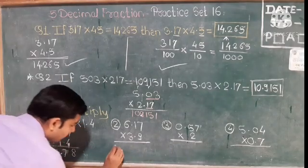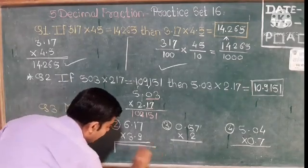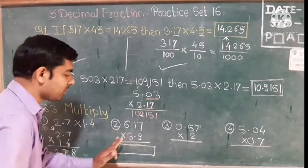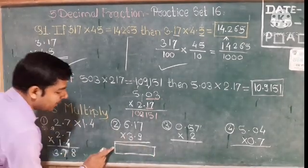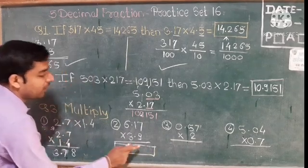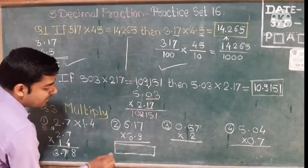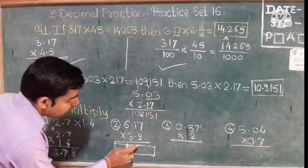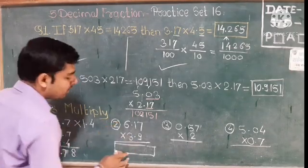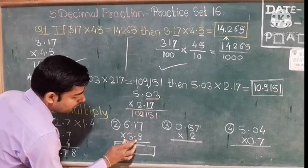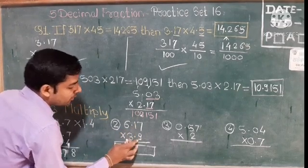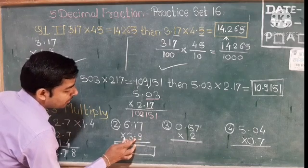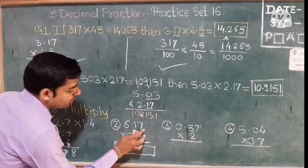What we have to do is calculate the digits of that decimal point. So, the point and the difference: what is it? It is point and the difference is 1, so it is 2.